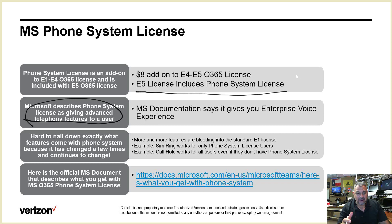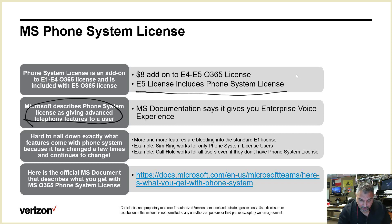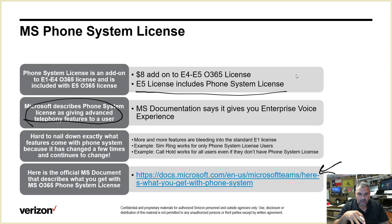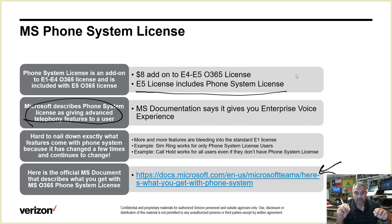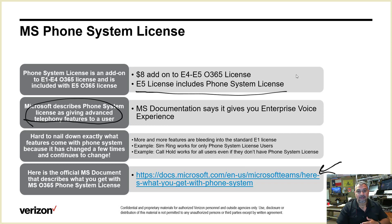E5 includes Phone System. Microsoft describes Phone System licenses as giving advanced telephony features to a user. If you go to that URL — I'll put it in the description — it gives you a two-column table showing features and descriptions. But that document isn't entirely accurate anymore.